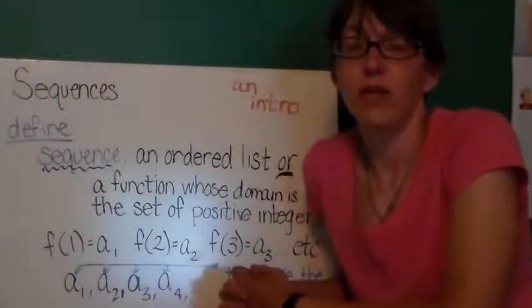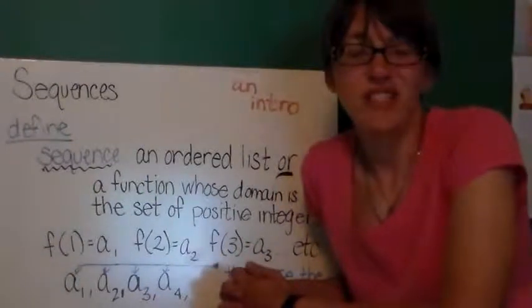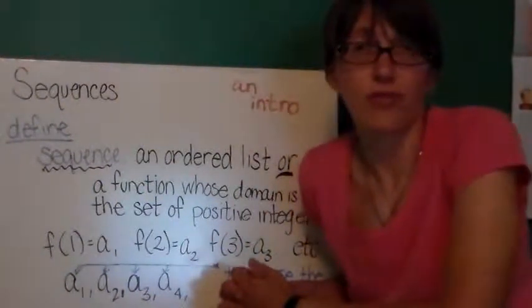What is a sequence? Well, in real life, a sequence is usually an ordered list. One, two, three, four, five.